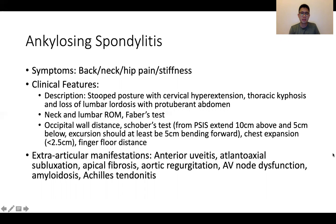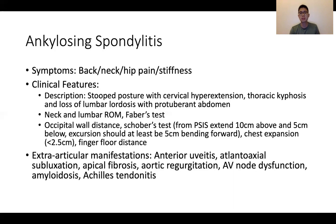For ankylosing spondylitis, it is important to think through the critical examination steps. Apart from your general description, the next would be demonstration of restricted range of movements over the cervical and lumbar vertebrae in the various axes. You may want to pick one or two special tests such as the Schober's test, FABER test, and perhaps the occiput-to-wall distance. Chest expansion is important because these patients can get restrictive lung disease. The extra-articular manifestations can be remembered with the A7 mnemonic: anterior uveitis, atlanto-axial subluxation, apical fibrosis, aortic regurgitation, atrioventricular node dysfunction, amyloidosis, and Achilles tendinitis.